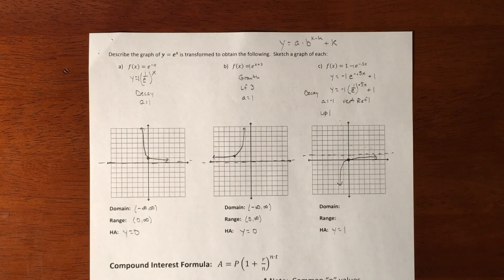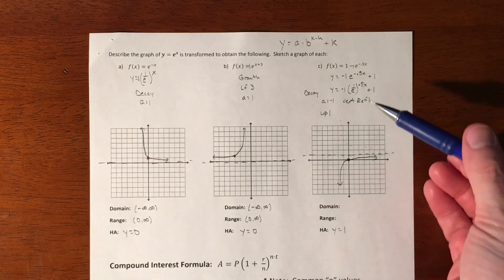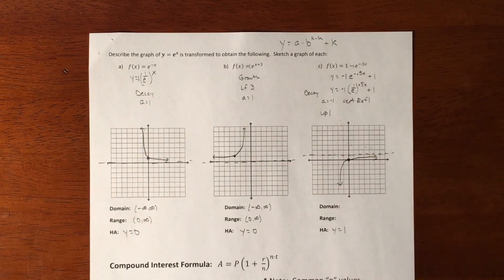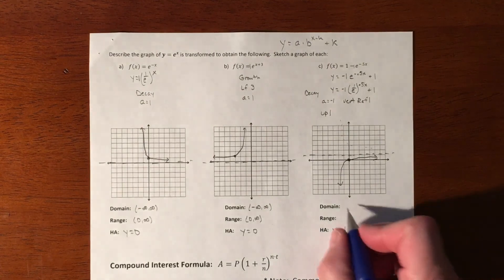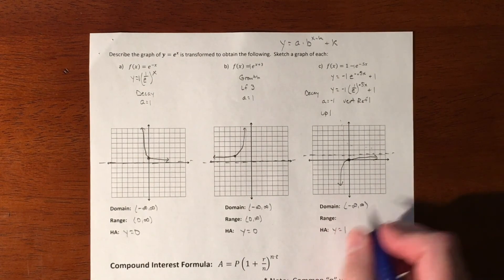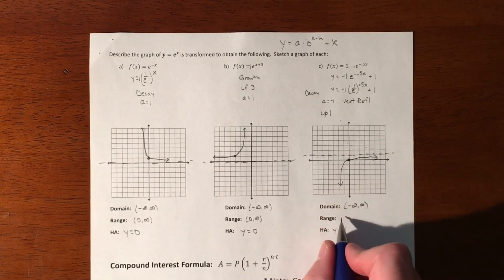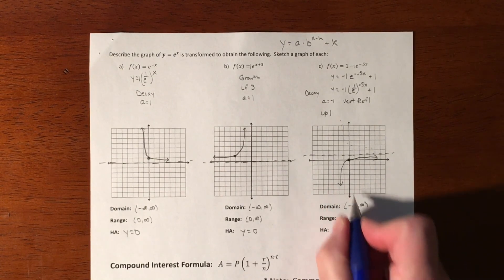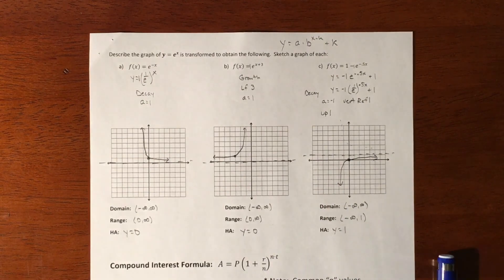E is a little bit more complicated to graph. It's very much a sketch because I can't do a whole lot of accuracy to it other than just making sure that I'm doing my reflections and shifts and all that sort of stuff accurately. And domain. Negative infinity to infinity. And our range is going from negative infinity to one. And that's it.